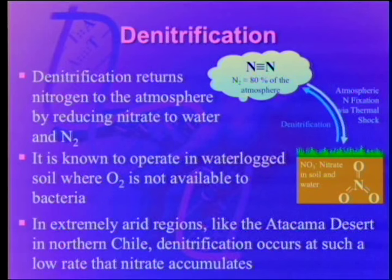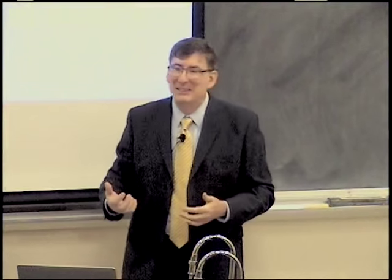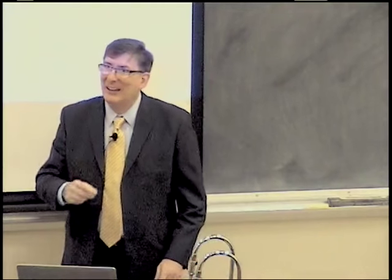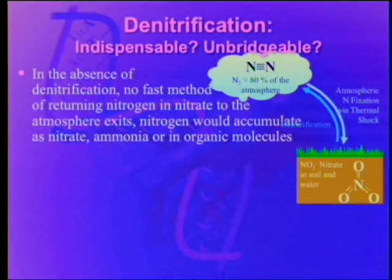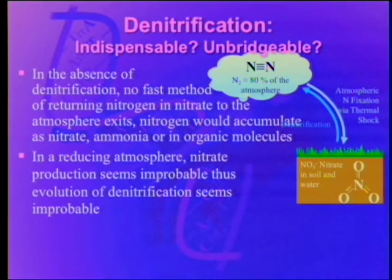Each of these steps, we run into similar kinds of issues. In the absence of denitrification, no fast method of returning nitrogen to the atmosphere exists. Nitrogen would accumulate as nitrate, ammonia, or in organic molecules, and we need to keep this whole system balanced out. In a reducing atmosphere, nitrate production seems improbable, thus evolution of denitrification seems improbable. The reducing atmosphere idea is really, really bad for nitrogen metabolism — even though you're getting your nitrogen for free in it.